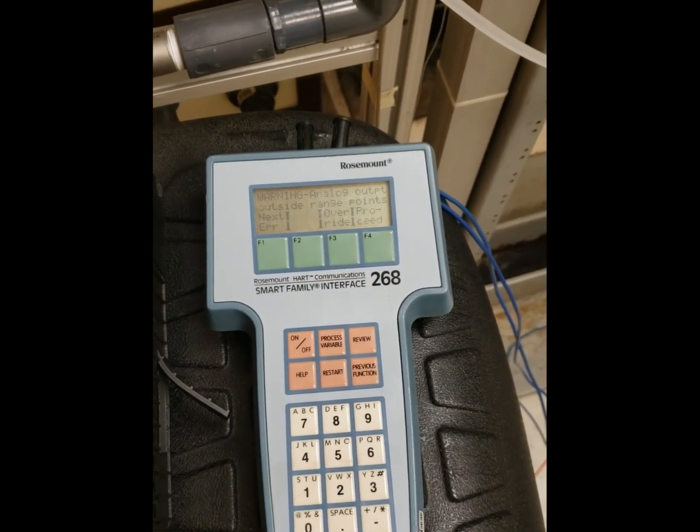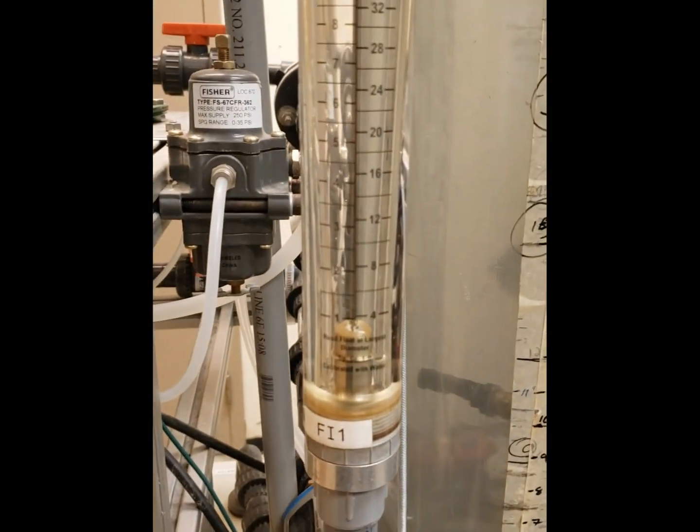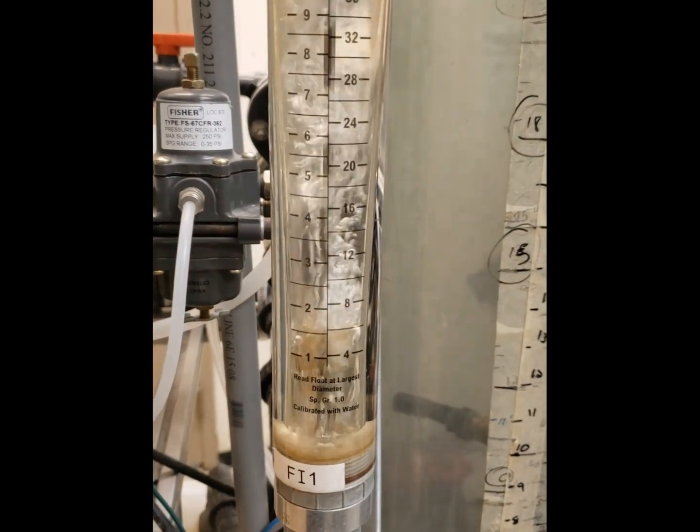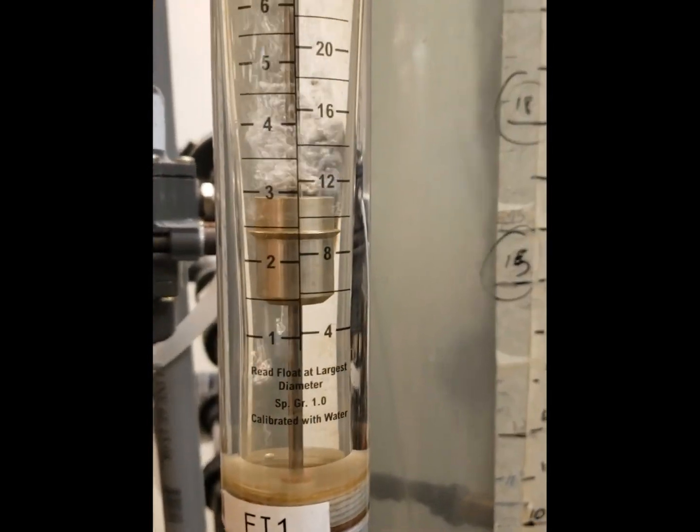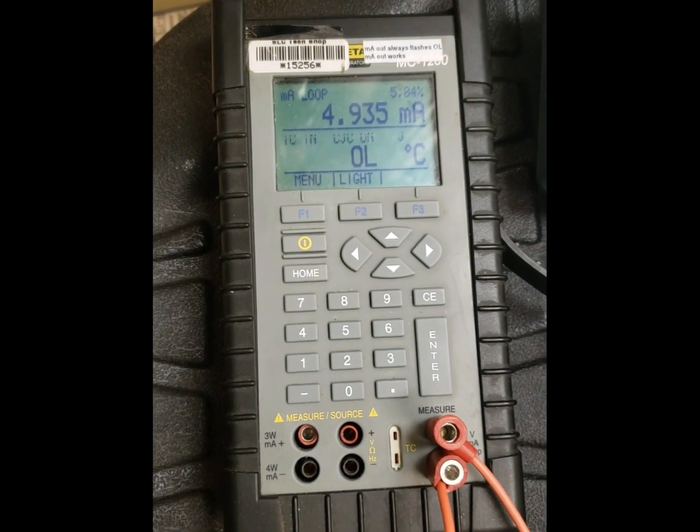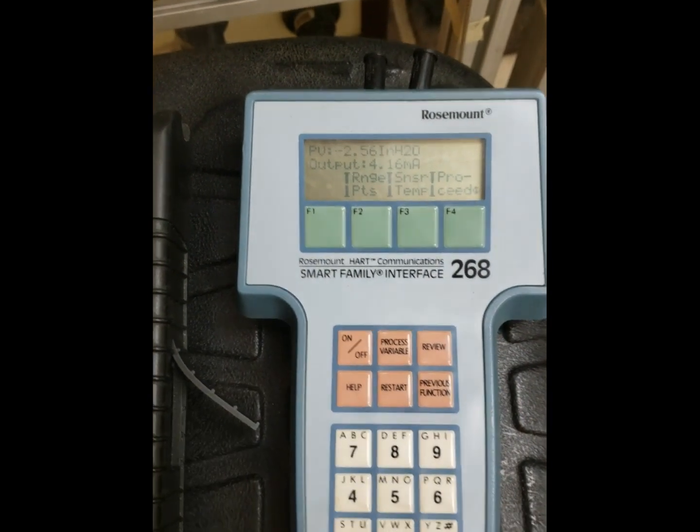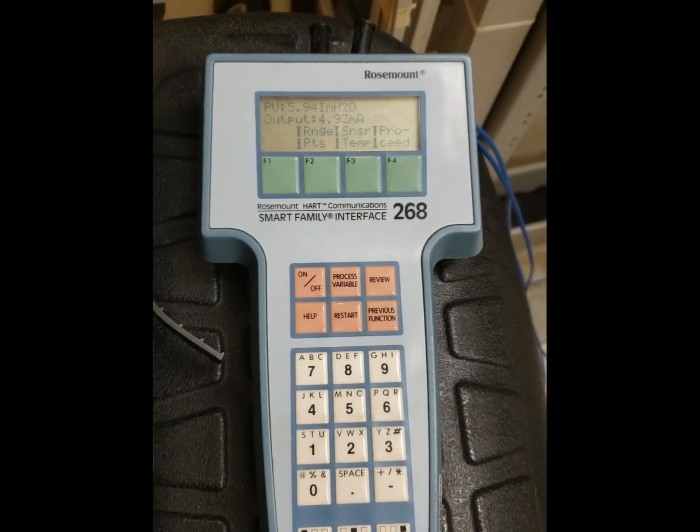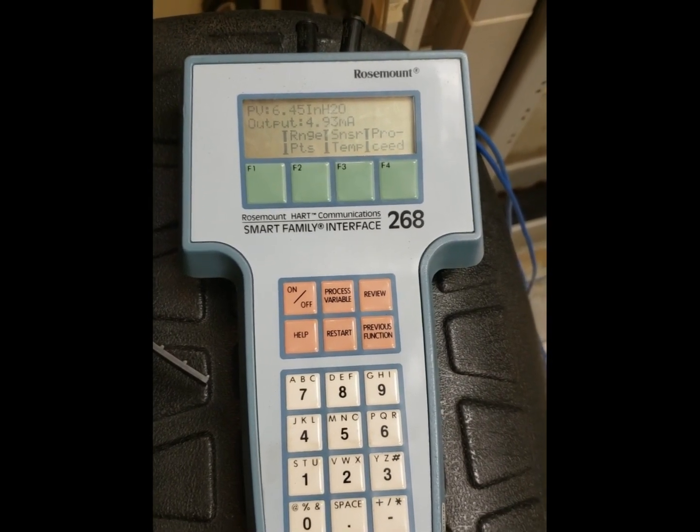So if we take this down to zero flow we have close to four milliamps and our transmitter says it's just outside its own range. So now we're going to put it up to 25% which would be two and a half gallons per minute.